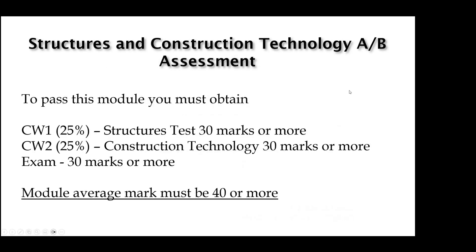The assessment for both modules, Construction Technology A and B, is divided in three components. The first one is the Structures test this Friday — you need 30 marks or more. Coursework 2 is Construction Technology, again requiring 30 marks or more. The final exam this Monday also needs 30 marks or more. Remember that the module average needs to be 40 or more to pass. So be sure you have all requirements to avoid issues at the end of the academic year.